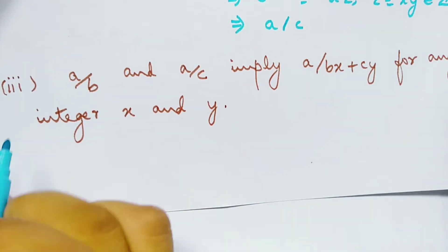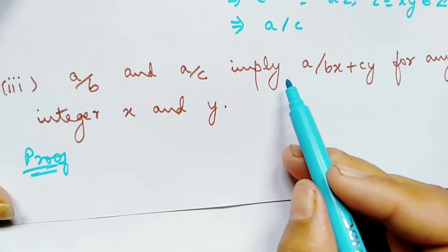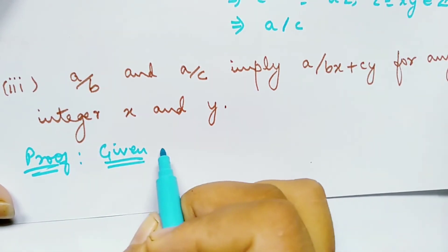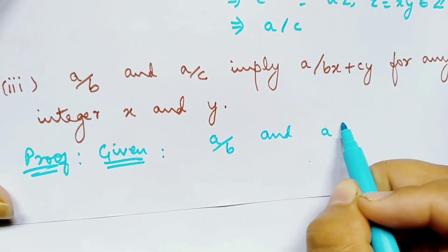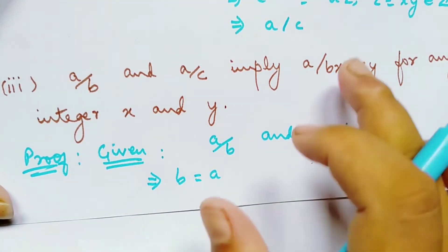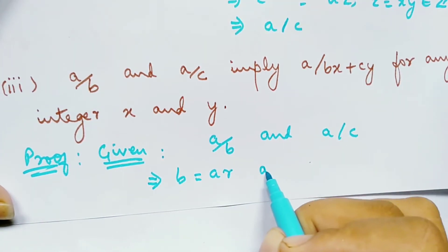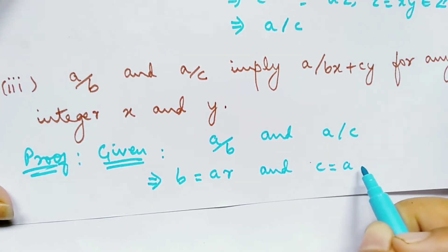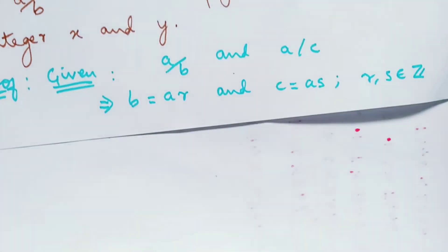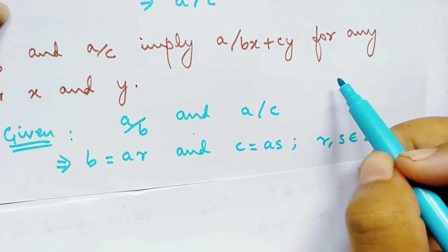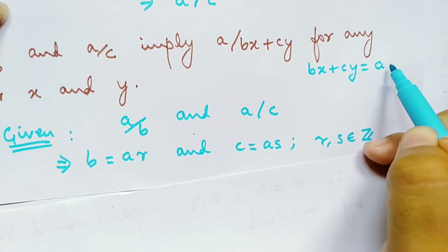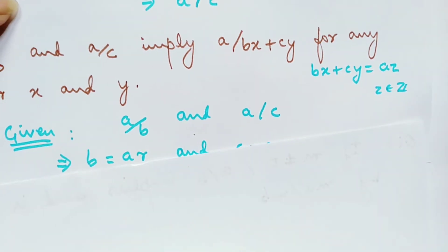The third theorem: if a divides b and a divides c, then it implies that a divides bx plus cy for any integers x and y. Since a divides b and a divides c, it implies that b equals a times some integer r, and a divides c implies c equals a times some integer s, where r and s are integers. To show that bx plus cy is divisible by a, we should be able to express bx plus cy as a times some integer z.